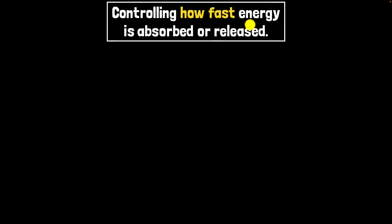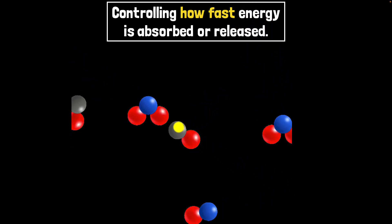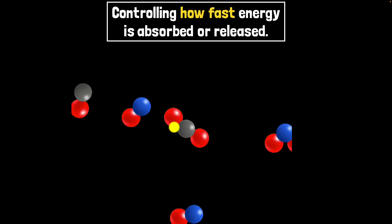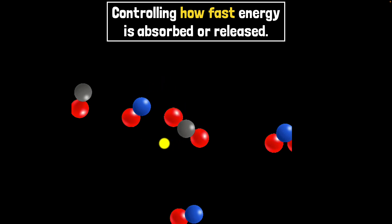Now, how do we control the rate at which energy is absorbed or released? We need to remember that reactant particles must collide with each other to break their bonds. When they collide, bonds break and new bonds form — collision is the key for chemical reactions to happen. So to control the rate of energy transfer, we need to control how many collisions are happening per second.